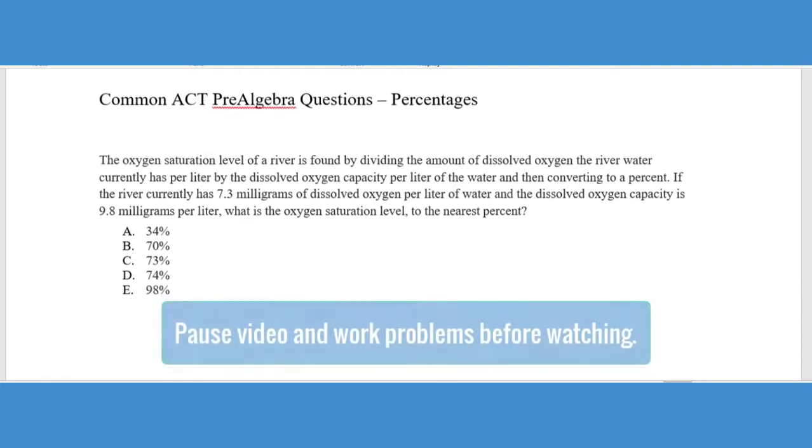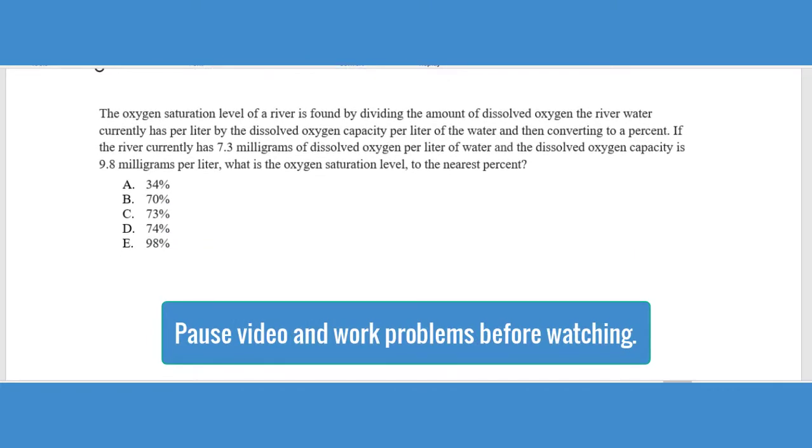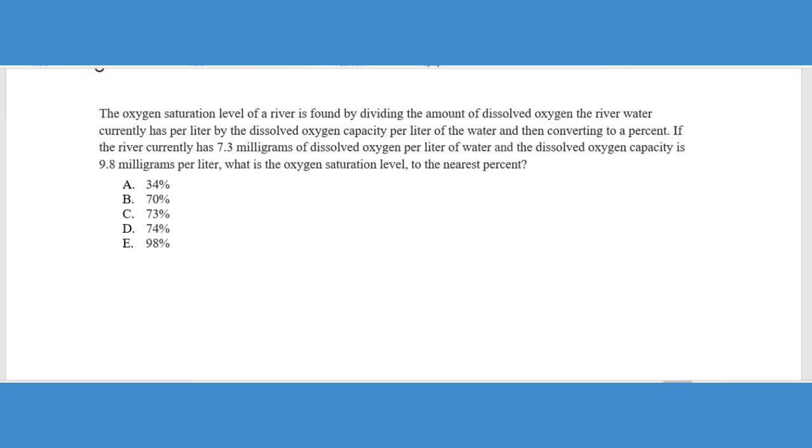Now, if we look at this first question, one of the reasons I picked this question is because it looks extremely involved. It's a very large word problem. There's a lot of information going on here. And a lot of students get intimidated when they look at this question. Now, what a lot of students are shocked to find out whenever I show them this question is this was actually question like three or four on the ACT math. So if you roll across a question like this very early on in the ACT, keep in mind that the question is probably going to be very simple. So you shouldn't need to worry about how difficult it is. You just need to figure out what it is that they're trying to get out of you. So let's take a quick look at this. The oxygen saturation level of a river is found by dividing the amount of dissolved oxygen the river water currently has per liter by...